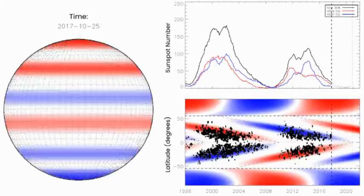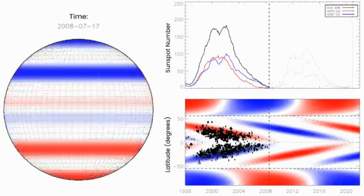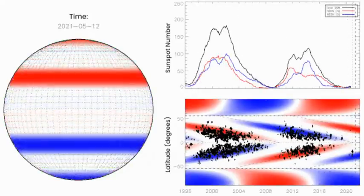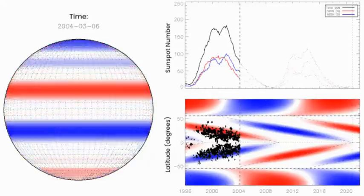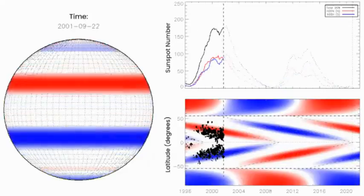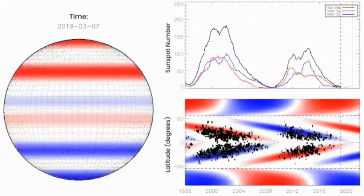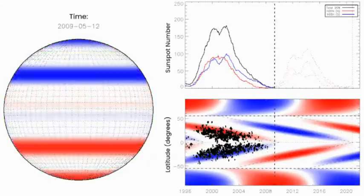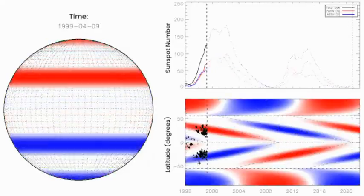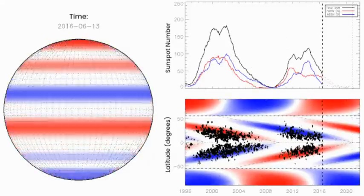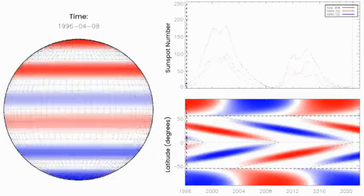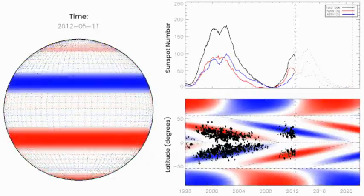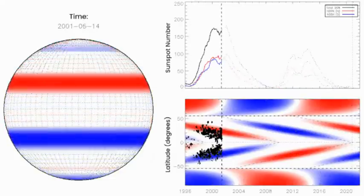Solar Cycle 25 is shaping up to be the exact opposite. Instead of a long interval, it appears to be coming on the heels of a very short one - only 10 years since the last terminator event that began Solar Cycle 24. Previous solar cycles with such short intervals have been among the strongest in recorded history. It's not a mystery.